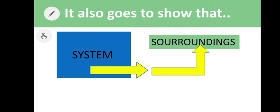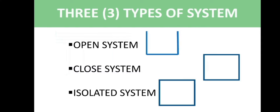It is also the same in reverse: if the system loses 500 joules, then the surroundings gain 500 joules. Now, there are three types of systems you have to familiarize yourself with: the open system, the closed system, and the isolated system.